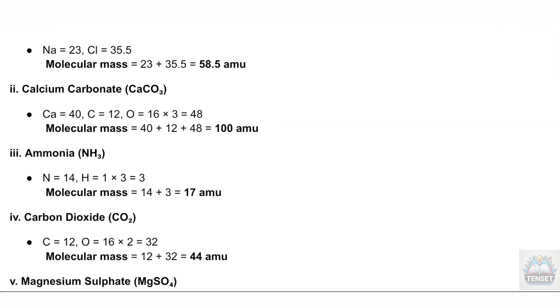II. Calcium carbonate (CaCO₃): Ca = 40, C = 12, O = 16 × 3 = 48. Molecular mass = 40 + 12 + 48 = 100 atomic mass units.